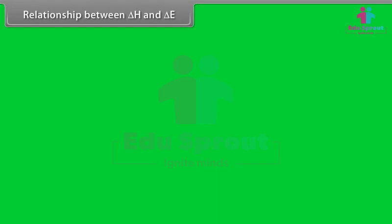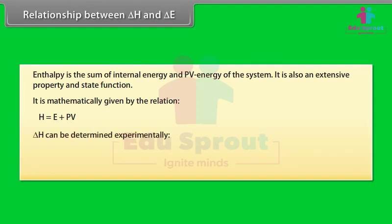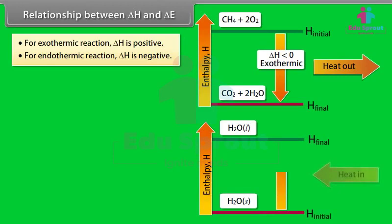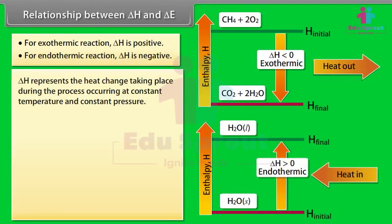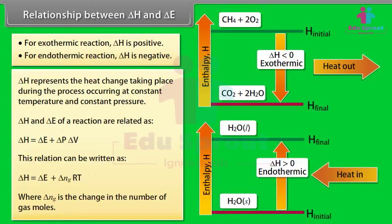Relationship between ΔH and ΔE. Enthalpy is the sum of internal energy and PV energy of the system. It is also an extensive property and state function, given by H = E + PV. ΔH = H₂ − H₁ = ΣHproducts − ΣHreactants. For exothermic reactions, ΔH is negative; for endothermic reactions, ΔH is positive. ΔH represents the heat change at constant temperature and pressure. ΔH and ΔE are related as ΔH = ΔE + ΔngRT, where Δng is the change in the number of gas moles.